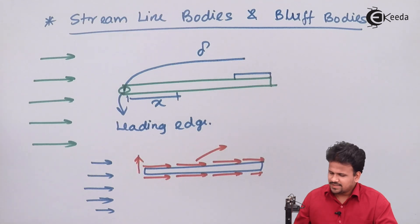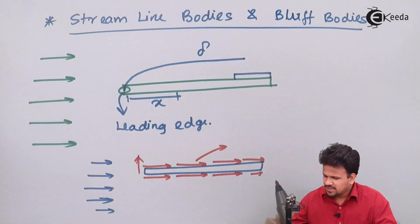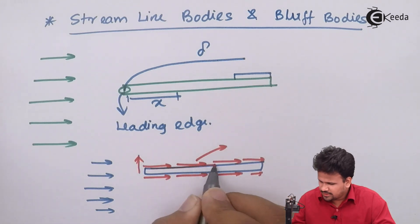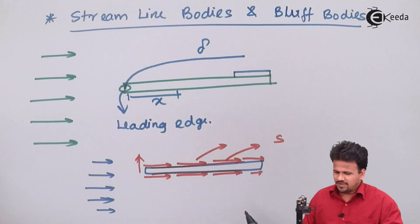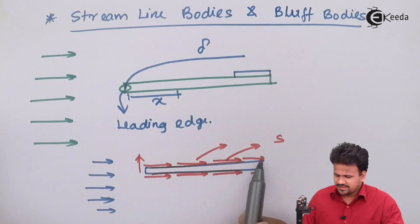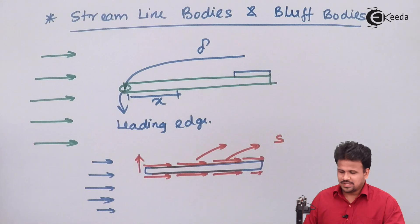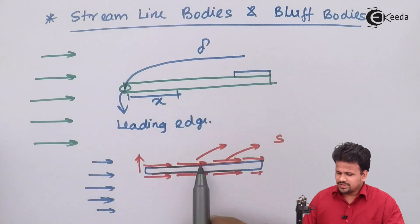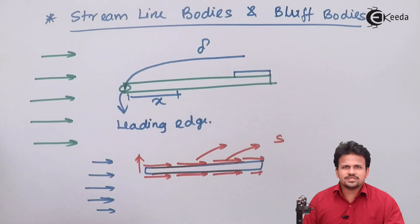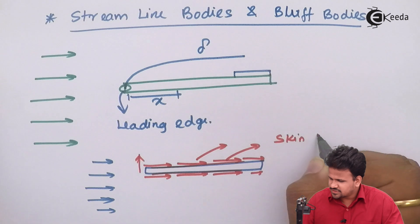Along with that, there is some friction on the surface of the body. There will be a drag force on this entire part as well as some lift force. When there is some amount of drag force, there will be a friction on the surface of this entire body. That friction is called skin friction.